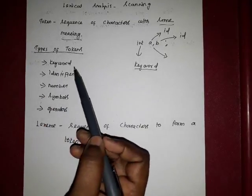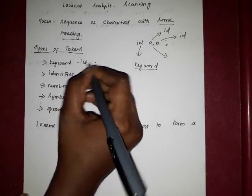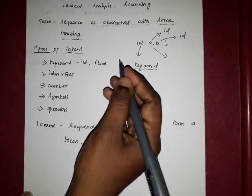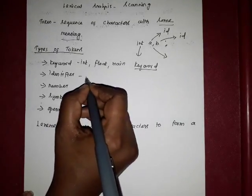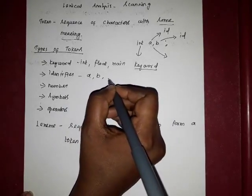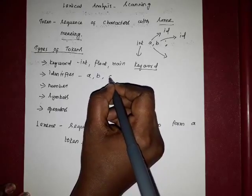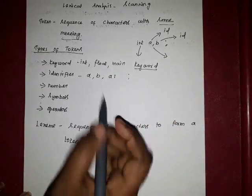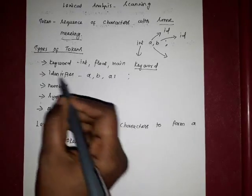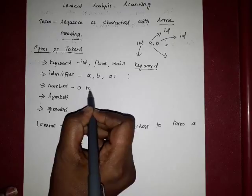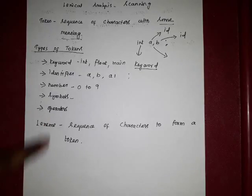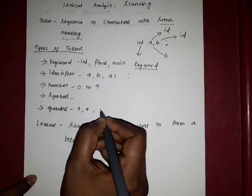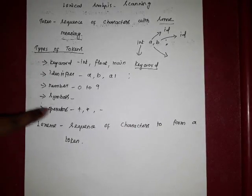Before that, let me give examples of token types. Keywords include all data types: integer, float, double, long integer, and also the main function. Identifiers include any alphabets, and any alphabet followed by digits or numbers is also an identifier. Numbers are digits from 0 to 9. Symbols include comma, semicolon, and colon. Operators include plus, multiplication, division, and subtraction. These are the types of tokens.